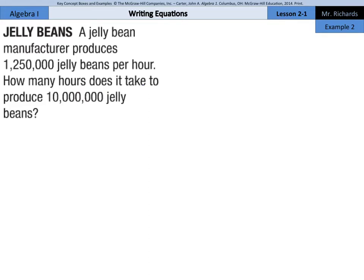In example 2, we're going to set up an equation to solve a real-world problem. A jelly bean manufacturer produces 1,250,000 jelly beans per hour. Yikes. How many hours does it take to produce 10 million jelly beans? Well, if we set up an equation, we're looking to find 10 million jelly beans. Now, we're going to set that equal to the 1,250,000 they can produce per hour.